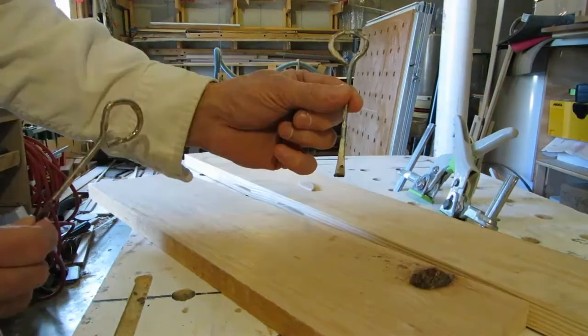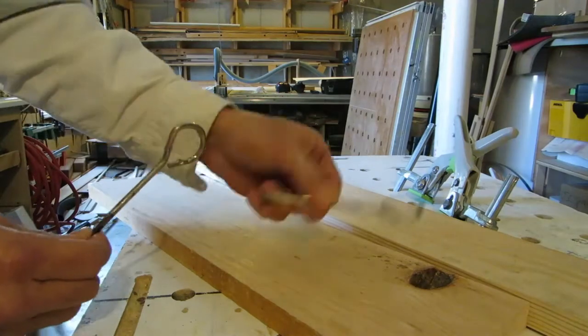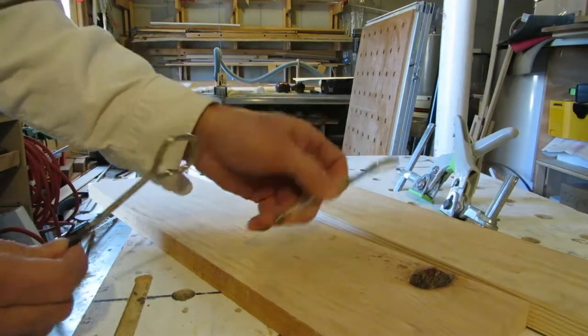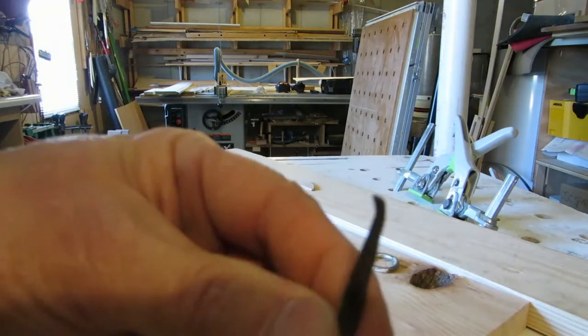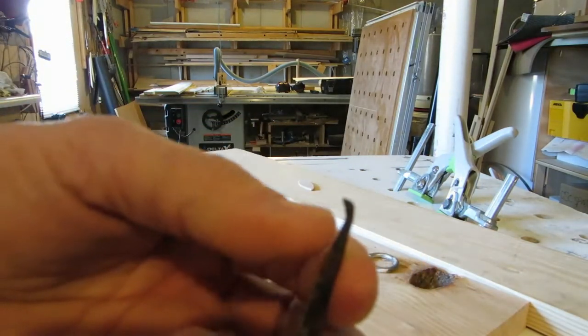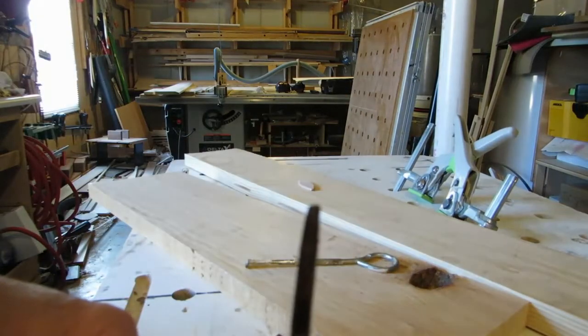It's nothing earth shattering. So you get these paint can lid openers at Lowe's or Home Depot, the big box stores. And then on my belt sander, all I did is I keep that little curve because you want that. But I just sand down the sides.